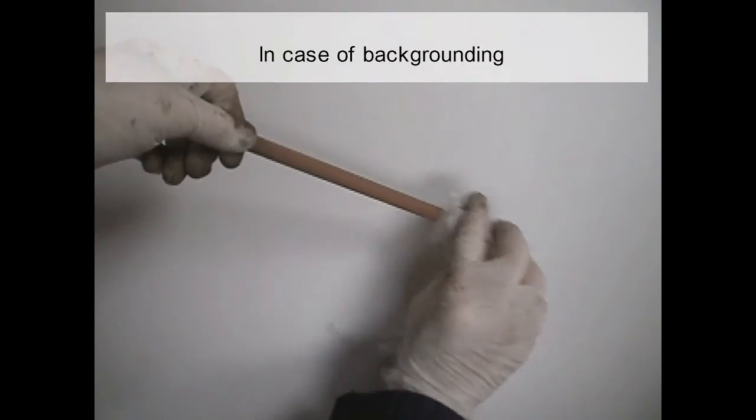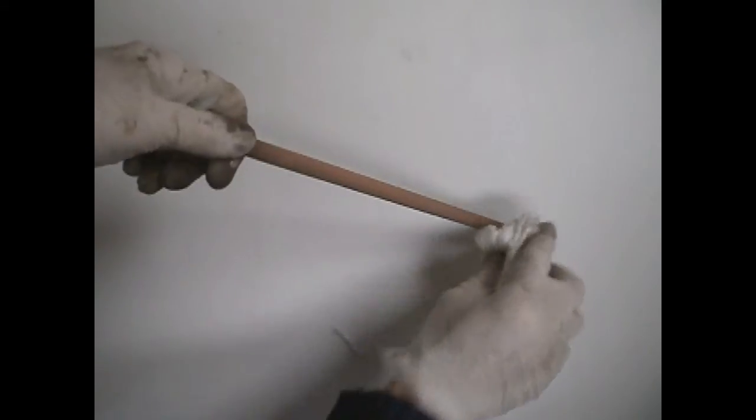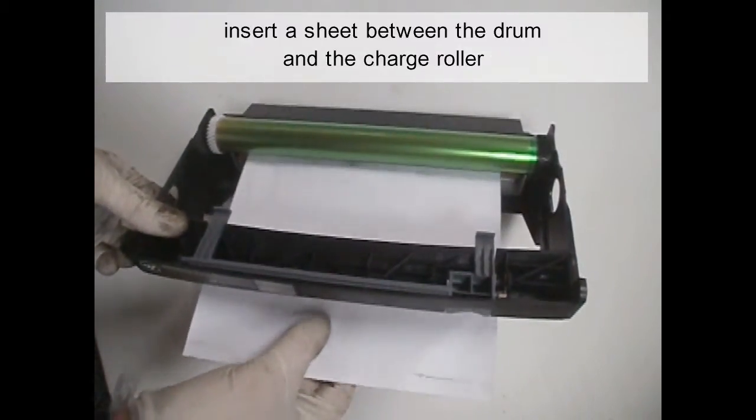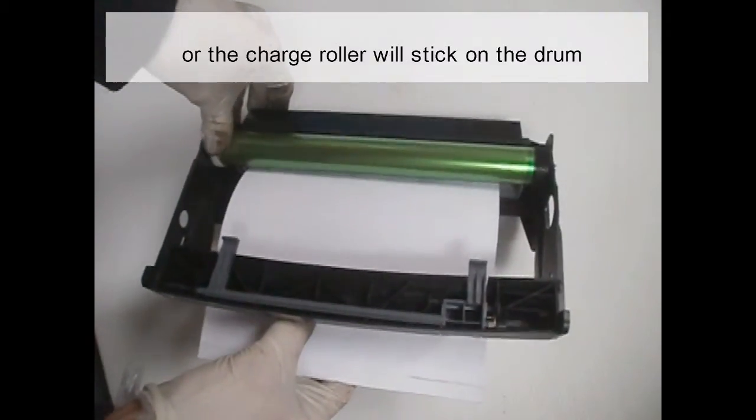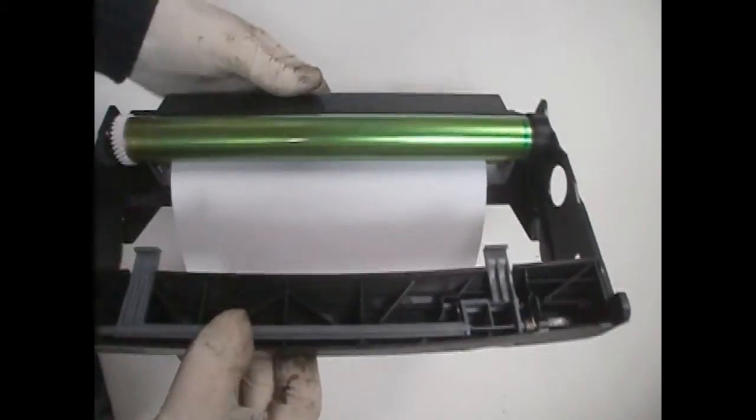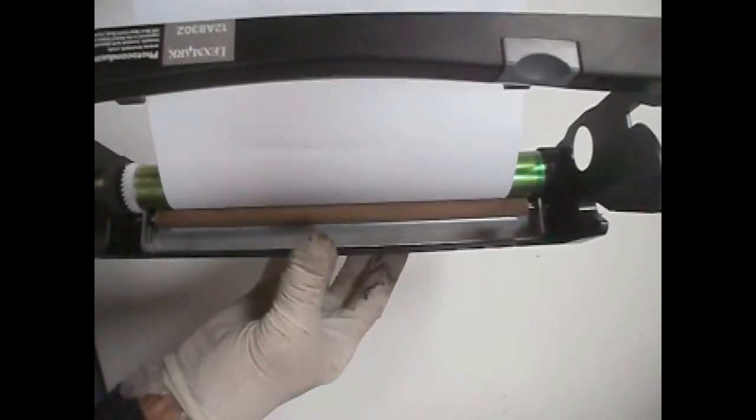You'll find reset instructions in the description of this video. In case of backgrounding, clean the charge roller with isopropyl alcohol. If you store the drum unit for a long time, insert a sheet between the drum and the charge roller, or the charge roller will stick on the drum. For any problem with the cartridge, you'll find a troubleshooting guide here.